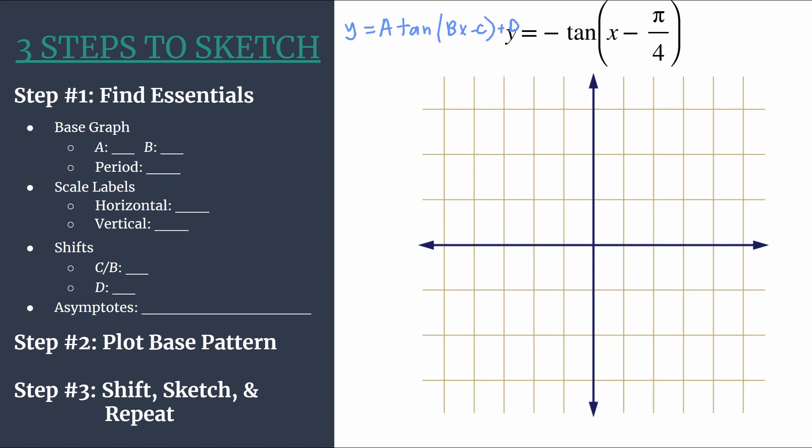Step one is to find the essentials. We'll start by focusing on our base graph, which we'll plot lightly in step two. For our base graph, we want to identify first a, which is the coefficient in front of tangent. We see there's a negative in front and an understood one. So a is negative one. I like to note a star on step two because this graph is going to have a vertical reflection because of that negative out front. That flips the original graph of tangent over the x-axis. I put the star there so I remember to do that when I get to step two.